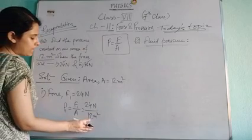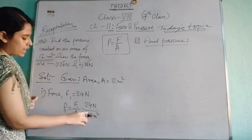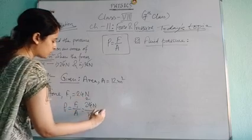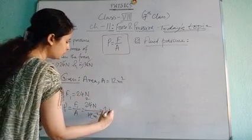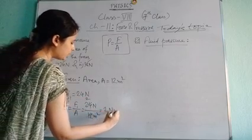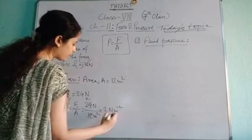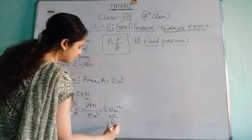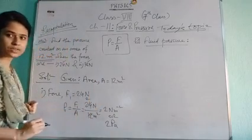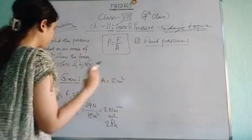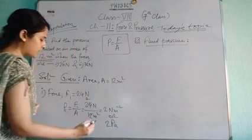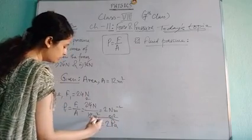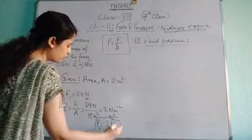12 into 2 gives us 24, so this gives us 2 Newton per meter squared, or 2 Pascal. So we got P1 equals 2 Pascal.